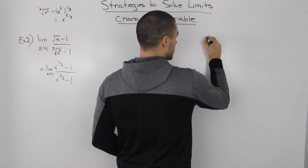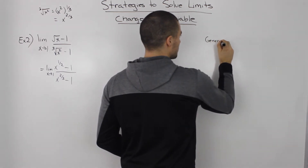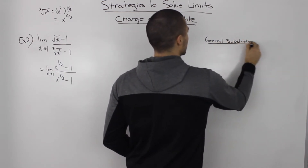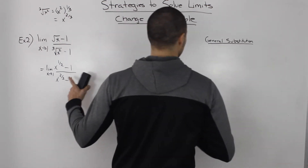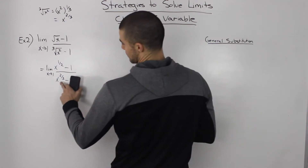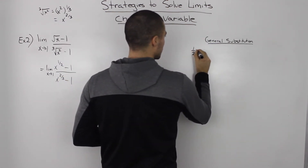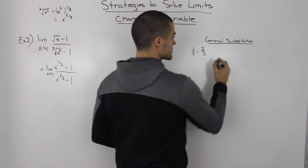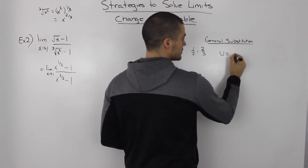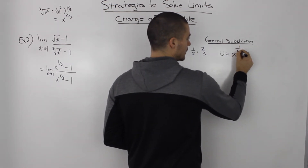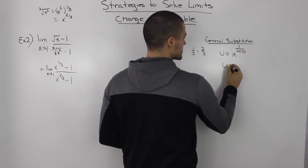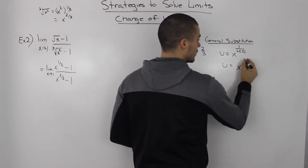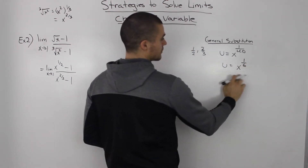And what do we always start with? We start with our general substitution. What I always do is write out what exponents I'm working with: I've got 1/2 and 2/3. As I mentioned in the previous example, our general substitution is always u equals x to the power of 1 over the lowest common denominator. The lowest common denominator between 1/2 and 2/3 is 6, so u equals x to the power of 1/6. This is our general substitution.